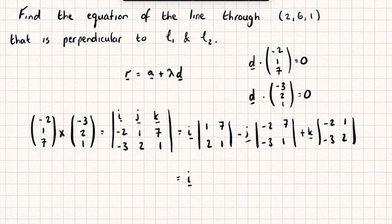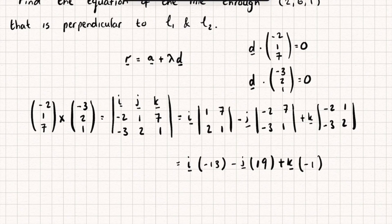So this is going to give me I multiplied by, well, 1 subtract 14 is -13, minus J multiplied by, I've got -2 subtract -21, so -2 plus 21 is positive 19, plus K multiplied by, it's going to be -4 subtract -3, so it's going to be -4 plus 3, which is -1.